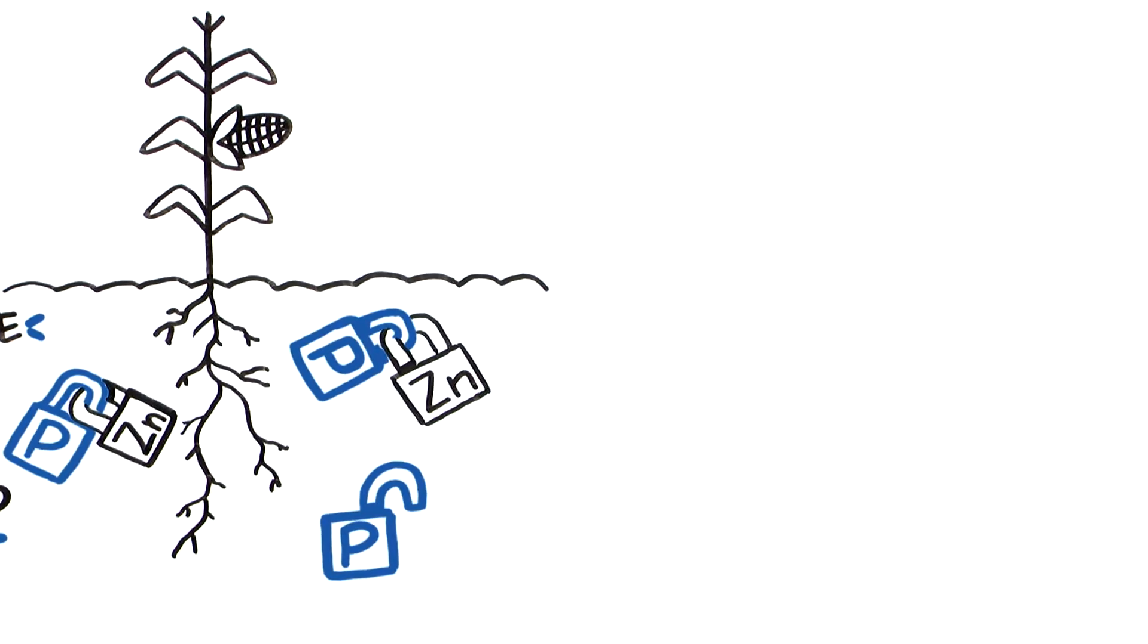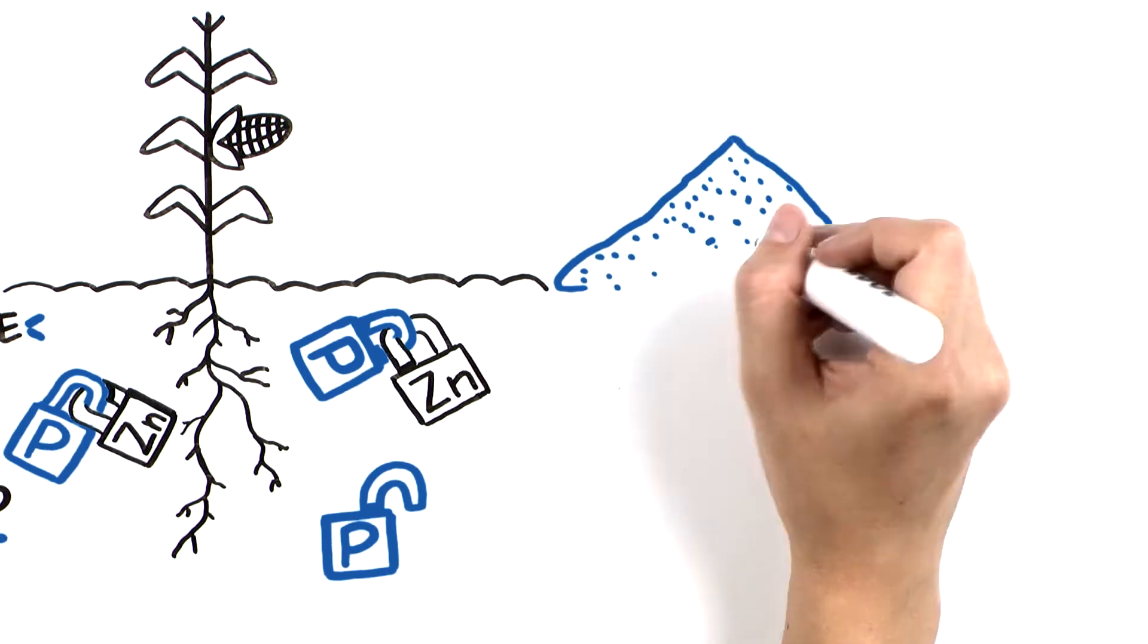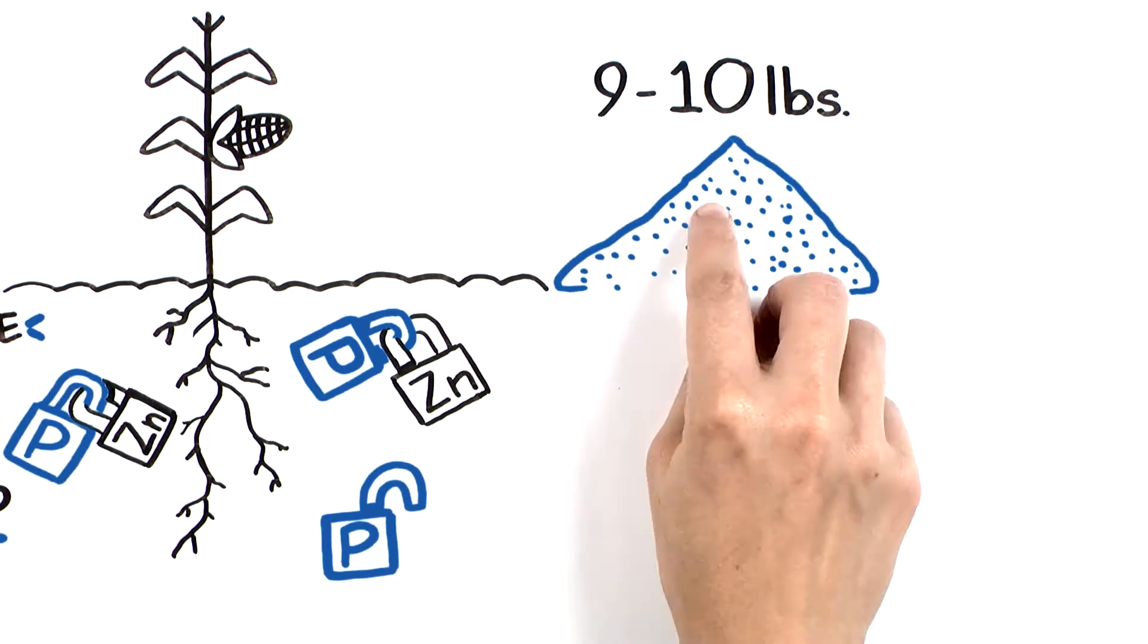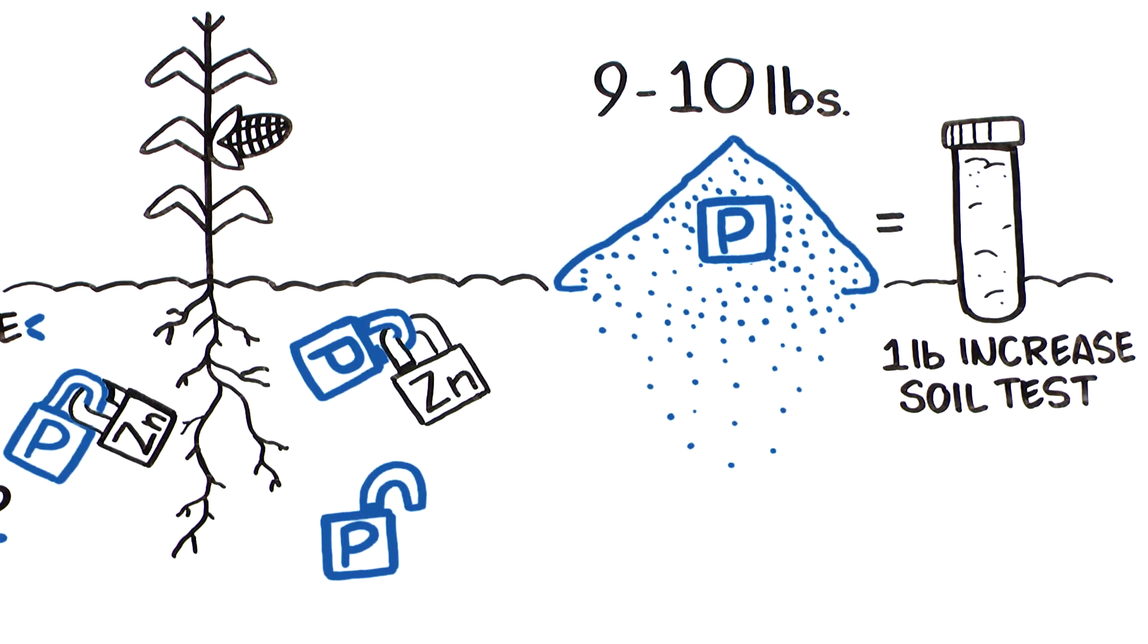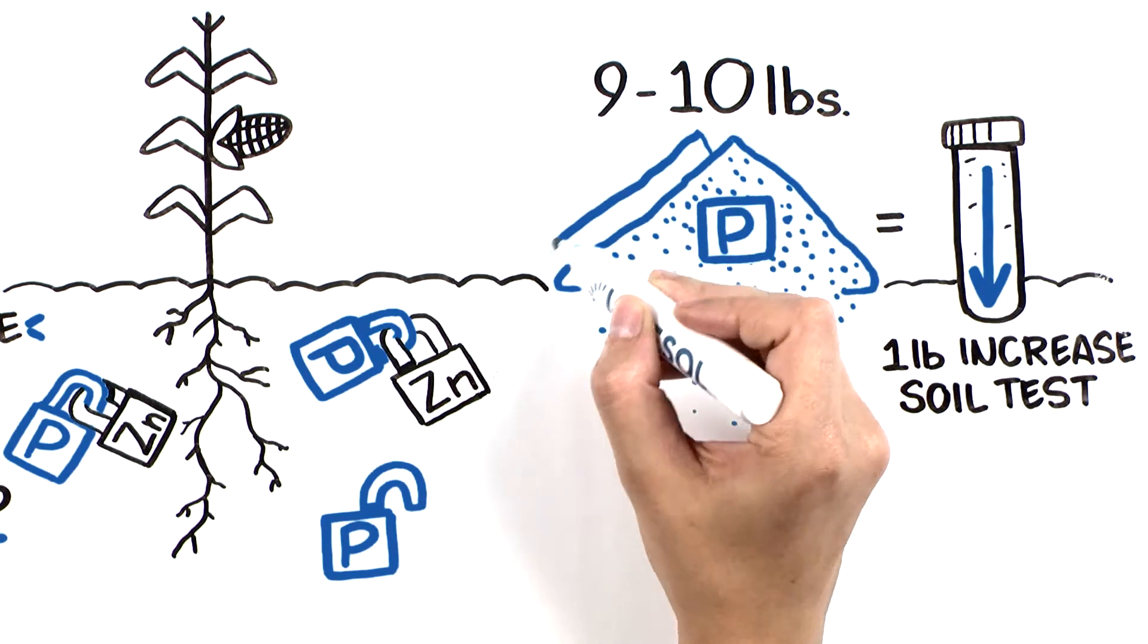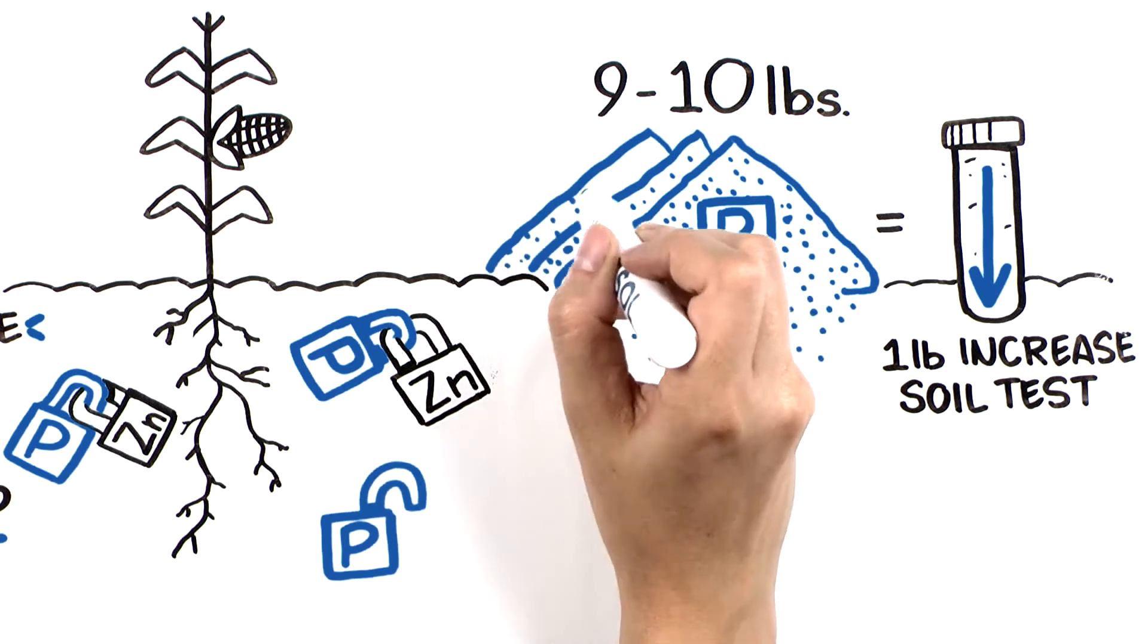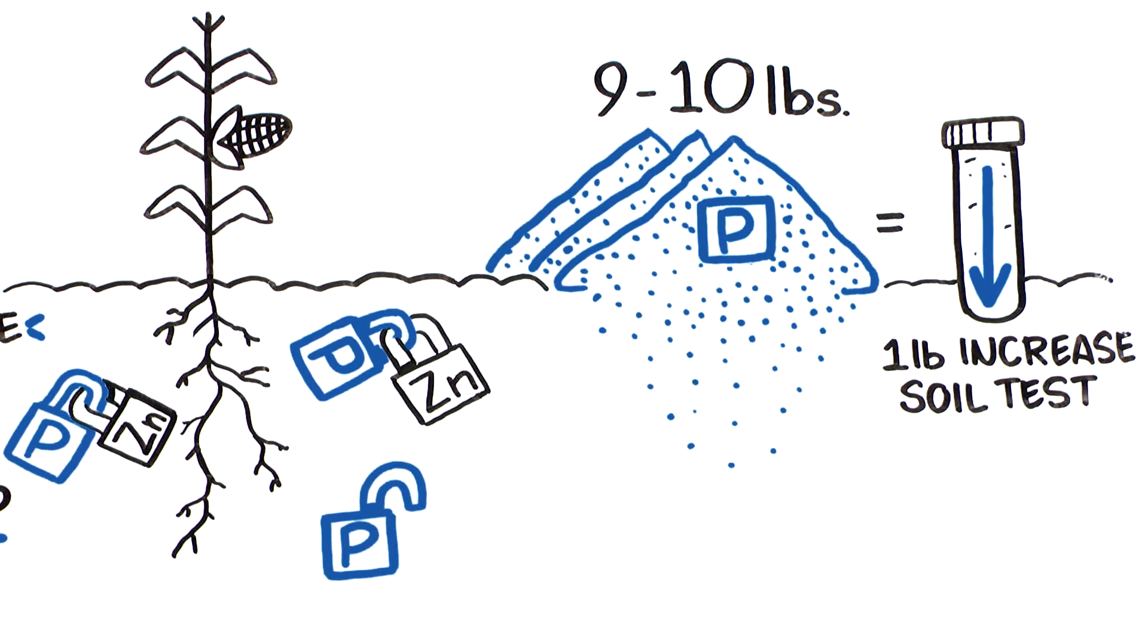As evidence of this, the general rule of thumb is that it typically takes up to 9 to 10 pounds of applied phosphorus to increase the soil test by 1 pound, based on soil type and conditions. In fact, the lower the soil test, the more likely applied phosphorus will be tied up, thereby requiring even greater amounts of applied phosphorus to make an impact.